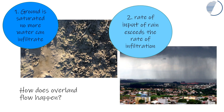Overland flow, also known as surface runoff, can occur in two main conditions. Firstly, the ground becomes saturated — every pore space is filled, no more water can infiltrate, and so you see a flow of water on the ground surface.